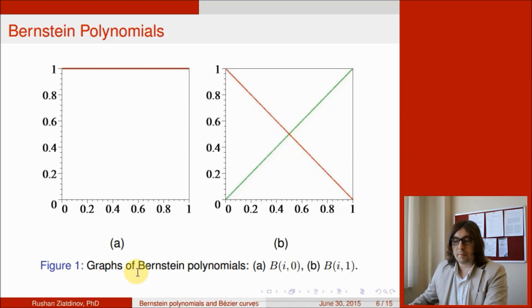The following graphs show Bernstein polynomials. Figure 1a shows b_i,0, so i equals 0 here, and we have a straight line y equals 1. Figure 1b shows Bernstein polynomial b_i,1 and i has two values here, starting from 0 to n, so it means 0 to 1, so here we have two straight lines.